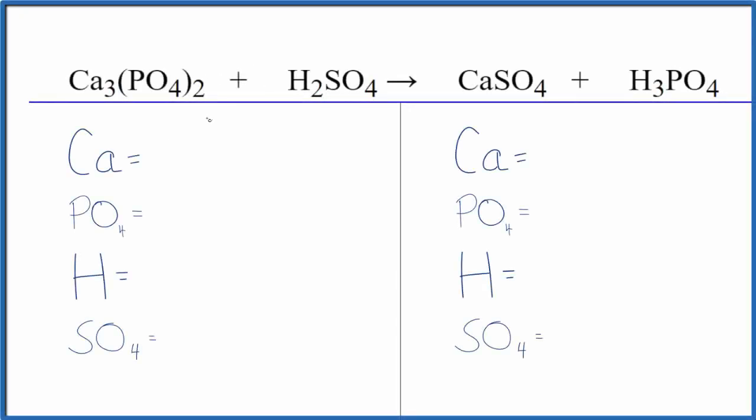In this video, we'll balance the equation for this double displacement reaction. We have Ca3PO42, that's calcium phosphate, and then we have sulfuric acid H2SO4.